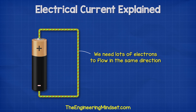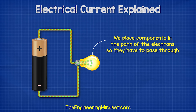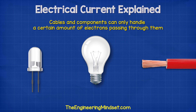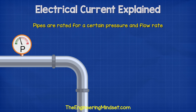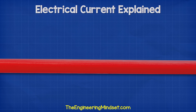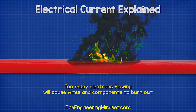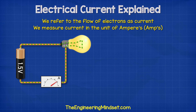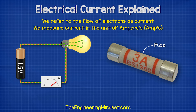We need a lot of electrons to flow along a circuit and through our lamps to get them to shine brightly. However, the cables and lamp can only handle a certain amount of electrons passing through them, just like a pipe is rated to handle a certain amount of water or a certain pressure. If it were to exceed this, then the pipe will just burst. Likewise, if too many electrons pass through the cable or the lamp, then they will burst or burn out. We refer to the flow of electrons as current, and we measure this in the unit of amperes — although you'll usually just hear people say amps. This is also represented with a capital A. For example, this fuse has a 3 and a capital A, which means it's rated for 3 amps of current.